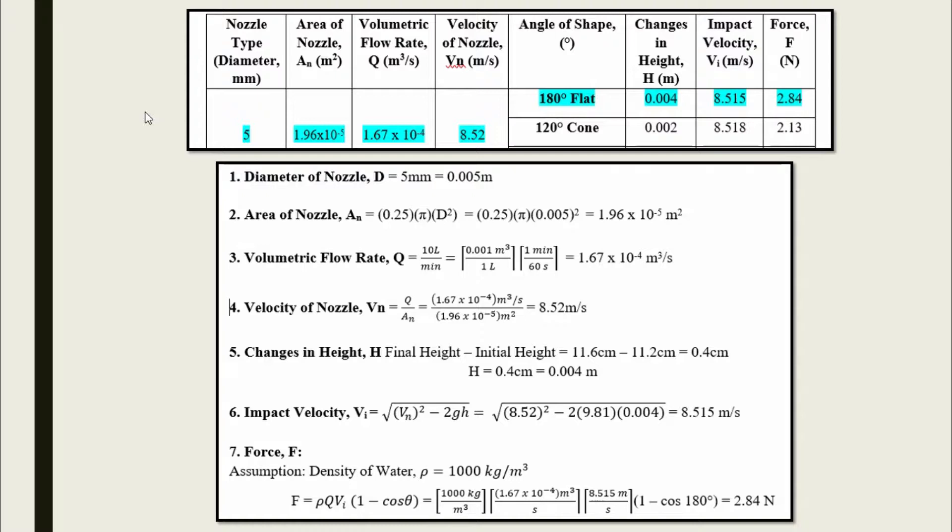These are the steps for us to calculate in the result part. Let us take 180 degree flat target as an example. First, we have to convert the diameter of the nozzle to meters, which is 0.005 meters. Then we can calculate the area of nozzle, An, by using the formula pi r squared, or pi times diameter squared over 4.